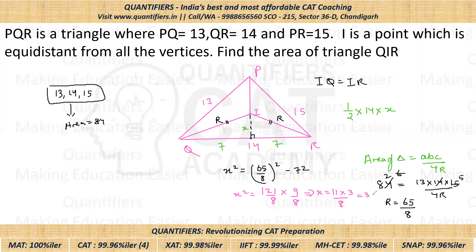Now we can calculate the area: Area of triangle QIR = ½ × base × height = ½ × 14 × (33/8) = 7 × 33/8 = 231/8 ≈ 29. This is a very important question where we used multiple geometry properties. Remember all the properties to solve geometry questions easily. Thank you everyone.